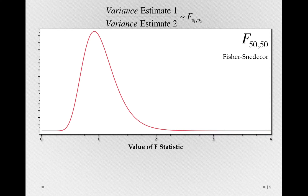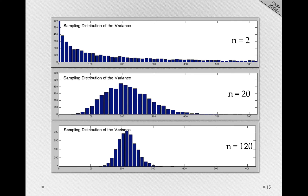You might have noticed that this distribution of F is not symmetric. That is, we're not equally likely to get values above 1 as below 1. So this distribution has skew, and that skew is related to the skew of those variance estimates. When we're taking variances repeatedly from a population, the distribution of those variance estimates won't be normal either. The skew is going to depend on how many observations we have for each sample.